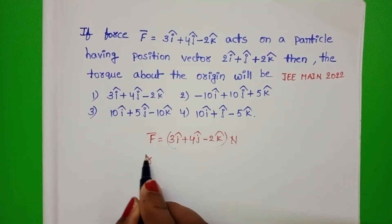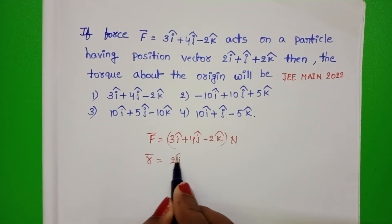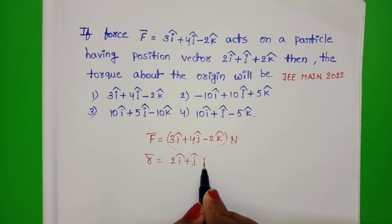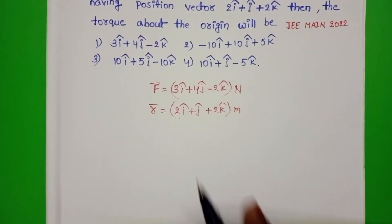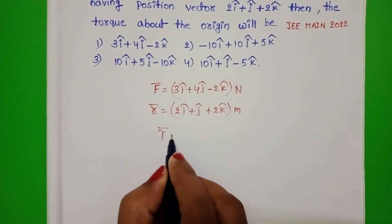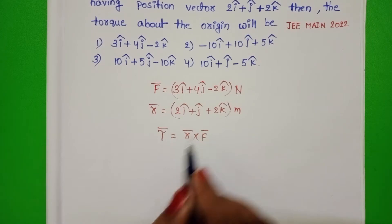And position vector R bar is equals to 2 I cap plus J cap plus 2 K cap. We have to find out the torque. Torque is equals to R bar cross F bar.